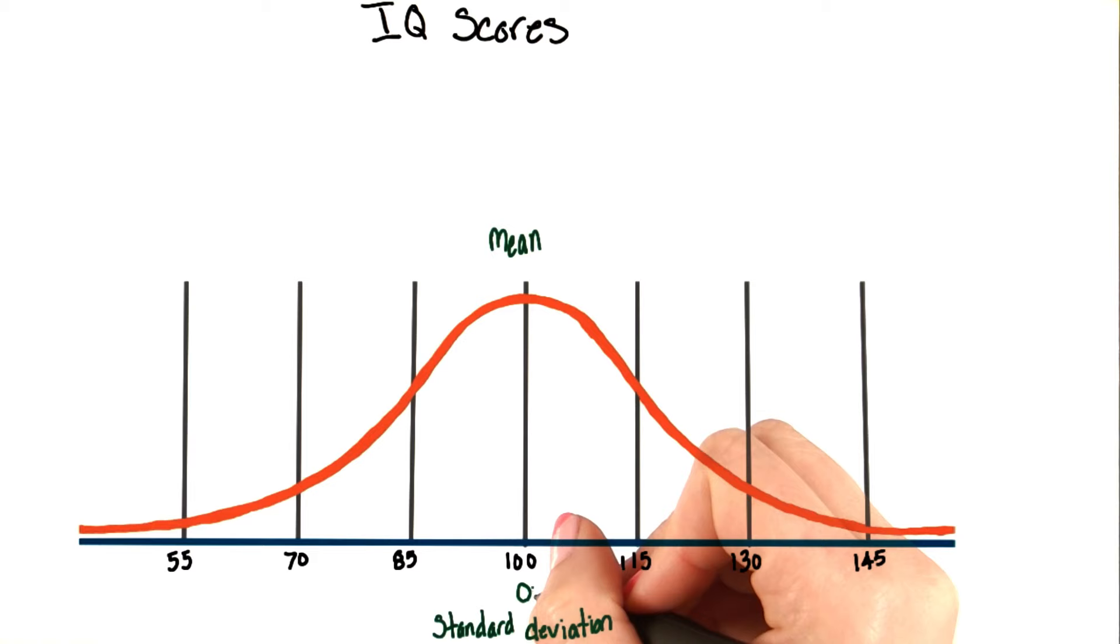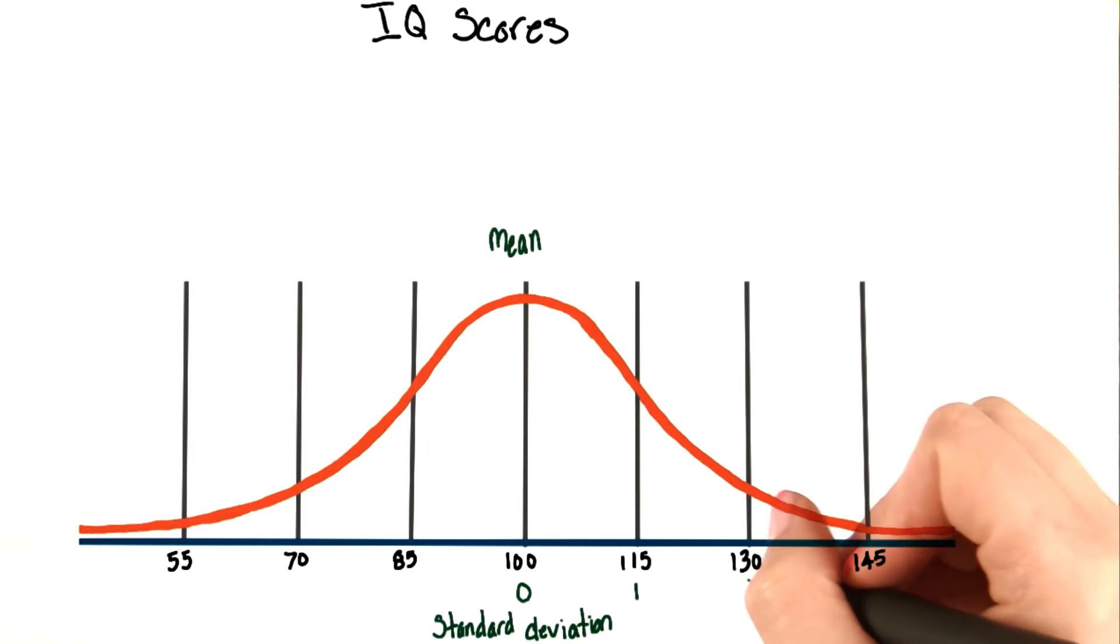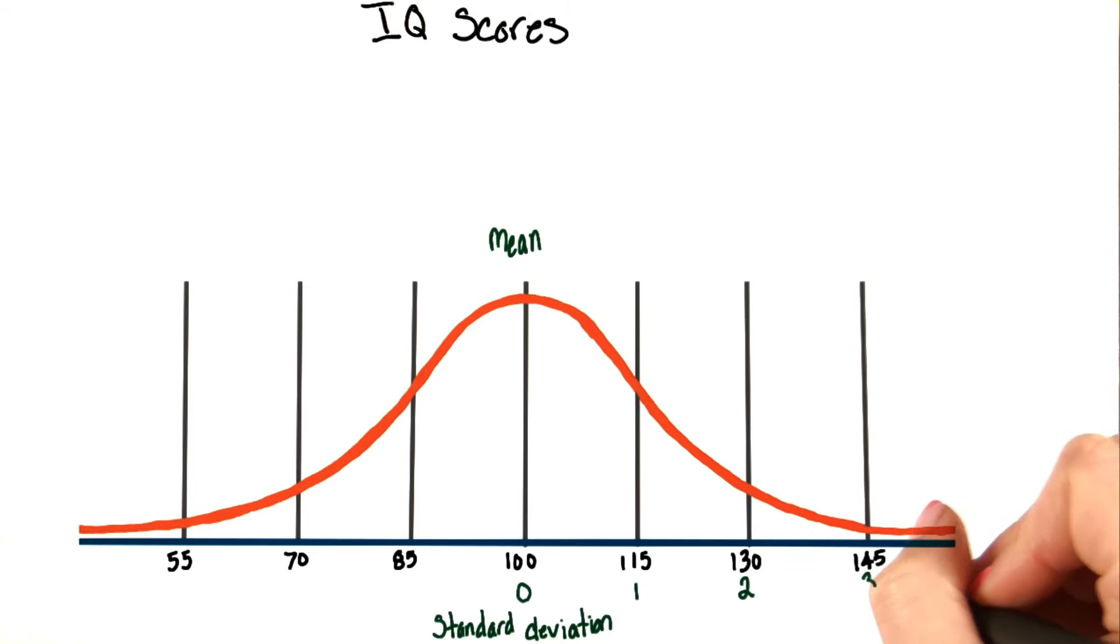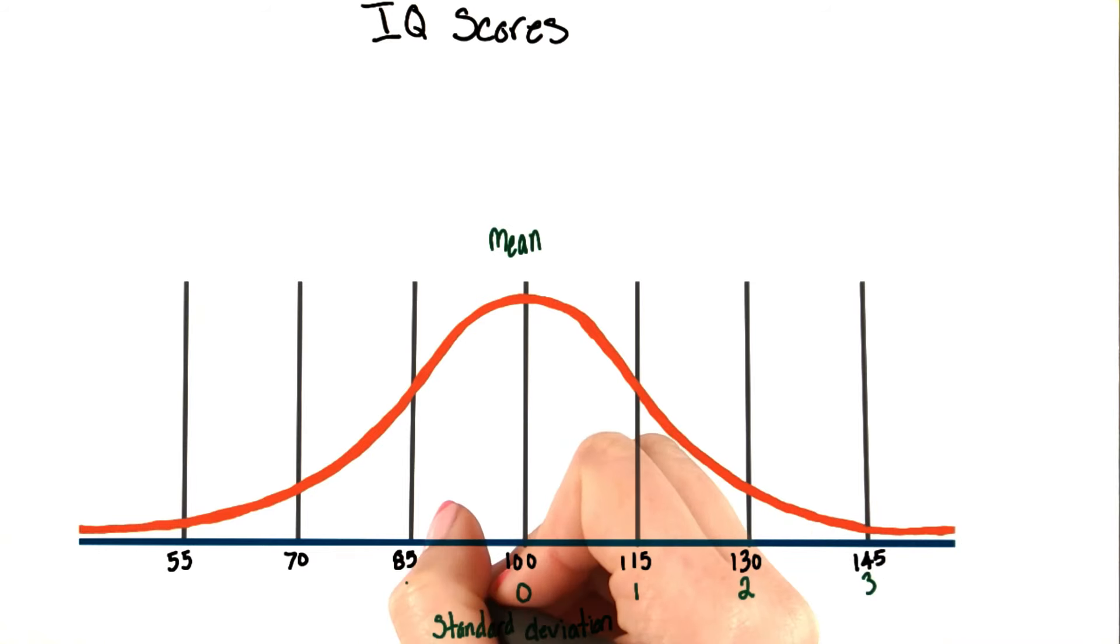The mean would be zero because there's no difference. 15 points one way would be one standard deviation, two standard deviations, and three standard deviations. Same with the other way: one standard deviation from the mean, two standard deviations from the mean, and three standard deviations from the mean.